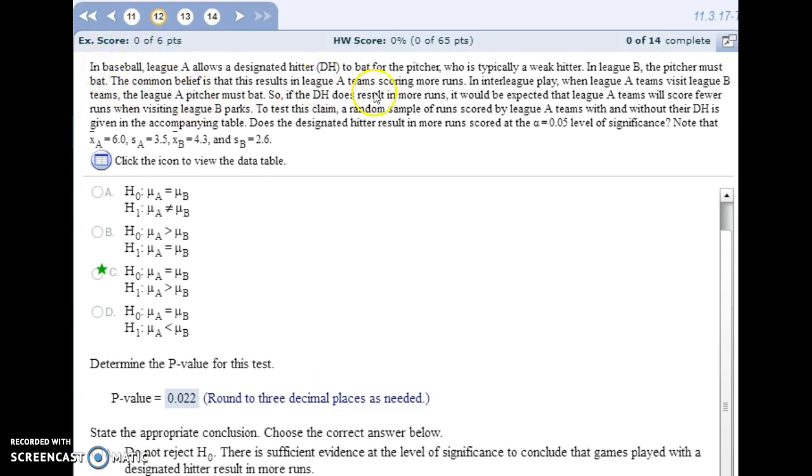For number 12, there's a lot to read here. Basically, we are trying to test whether teams score more runs when they use a designated hitter in place of their pitcher batting. So we took samples of both situations. They're in a table here, and we'll jump into that in a bit, but our null hypothesis is that the average runs scored is equal, whether they use a designated hitter or their pitcher bats. Our alternative hypothesis is that with the designated hitter, they will score a higher average runs than when they have their pitcher batting.